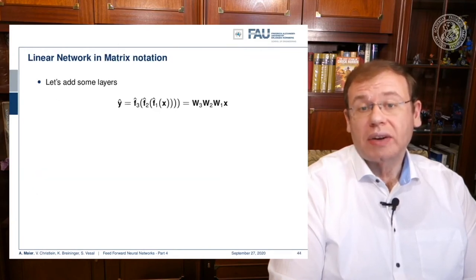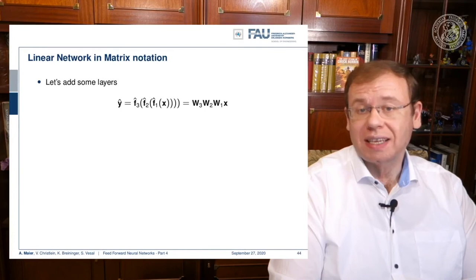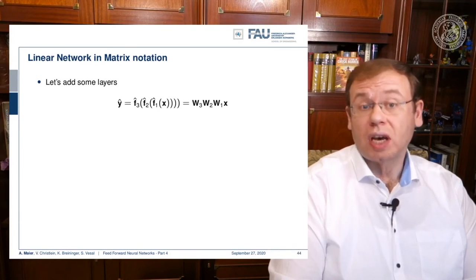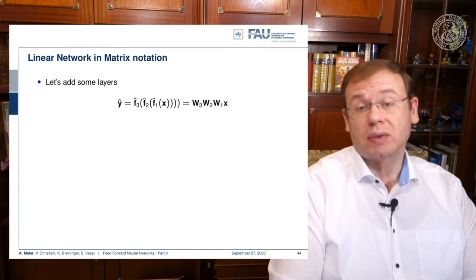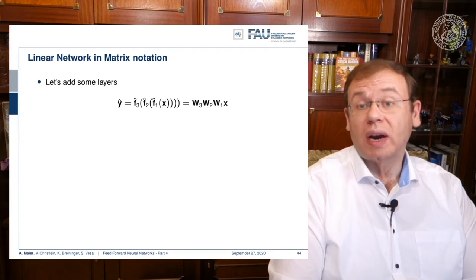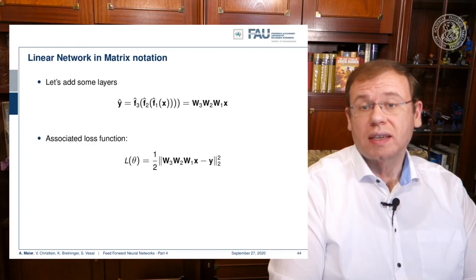Now let's add layers to our estimator using three nested functions. We have linear matrices here — an academic example, since multiplying W1, W2, and W3 together would simply collapse into a single matrix. Still, this example is useful because it shows what happens in the computation of the backpropagation process and why those steps are really valuable. We again use the L2 loss with our three matrices inside.